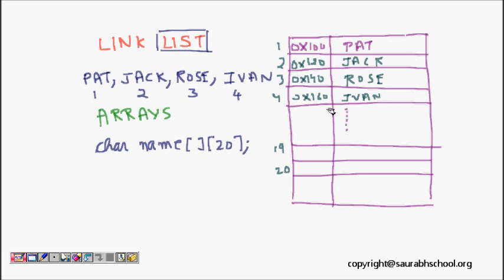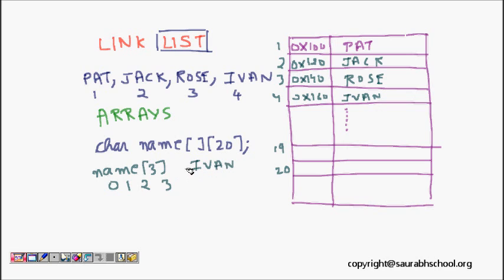These 20 memory locations each hold one name in the list. If I want to find the third name, I just do name[3] — actually name[3] gives the fourth element since arrays start from 0, so it will return Ivan. Arrays work very well for lists.